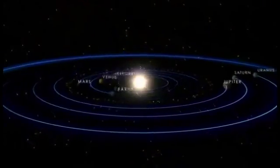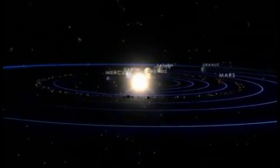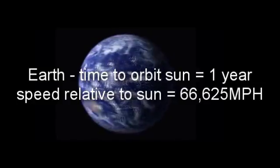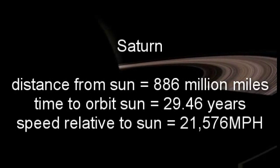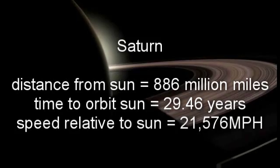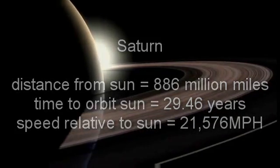Due to the stronger gravity closer to a star or planet, a planet, moon, or satellite must travel faster to remain in a stable orbit. It takes the Earth one year to orbit the Sun at a speed of 66,625 miles per hour. Saturn is nearly ten times further from the Sun and takes 29.46 years to orbit at a speed of 21,576 miles per hour.